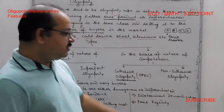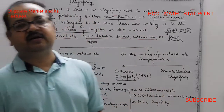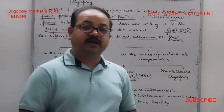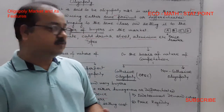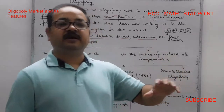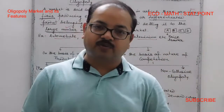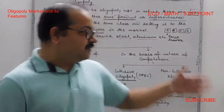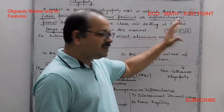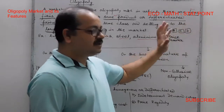The seventh feature is indeterminate demand. The demand curve in oligopoly is indeterminate. This means that when a firm changes its price or quantity, it is uncertain how rival firms will respond — whether they will follow the price change or not.